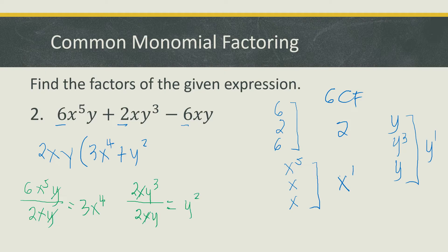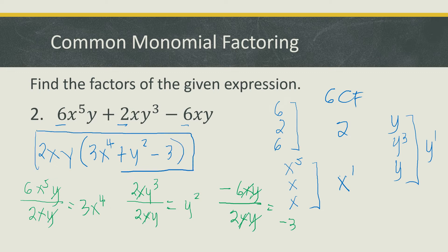For the third term, negative 6xy divided by 2xy: negative 6 divided by 2 is negative 3, x cancels, and y cancels. So the last term is minus 3. Therefore, the factors are 2xy multiplied by 3x to the 4th plus y squared minus 3.